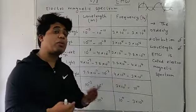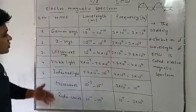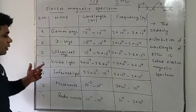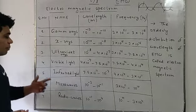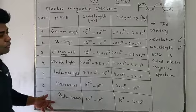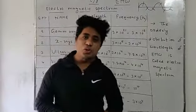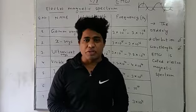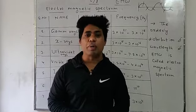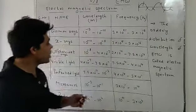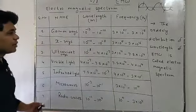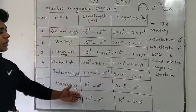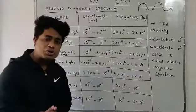So these are the wavelengths and frequencies of the electromagnetic spectrum, which has seven parts: gamma rays, X-rays, ultraviolet, visible, infrared, microwave, and radio waves. The orderly distribution of electromagnetic waves on the basis of their wavelength and frequency is called the electromagnetic spectrum. There are 7 parts in total.